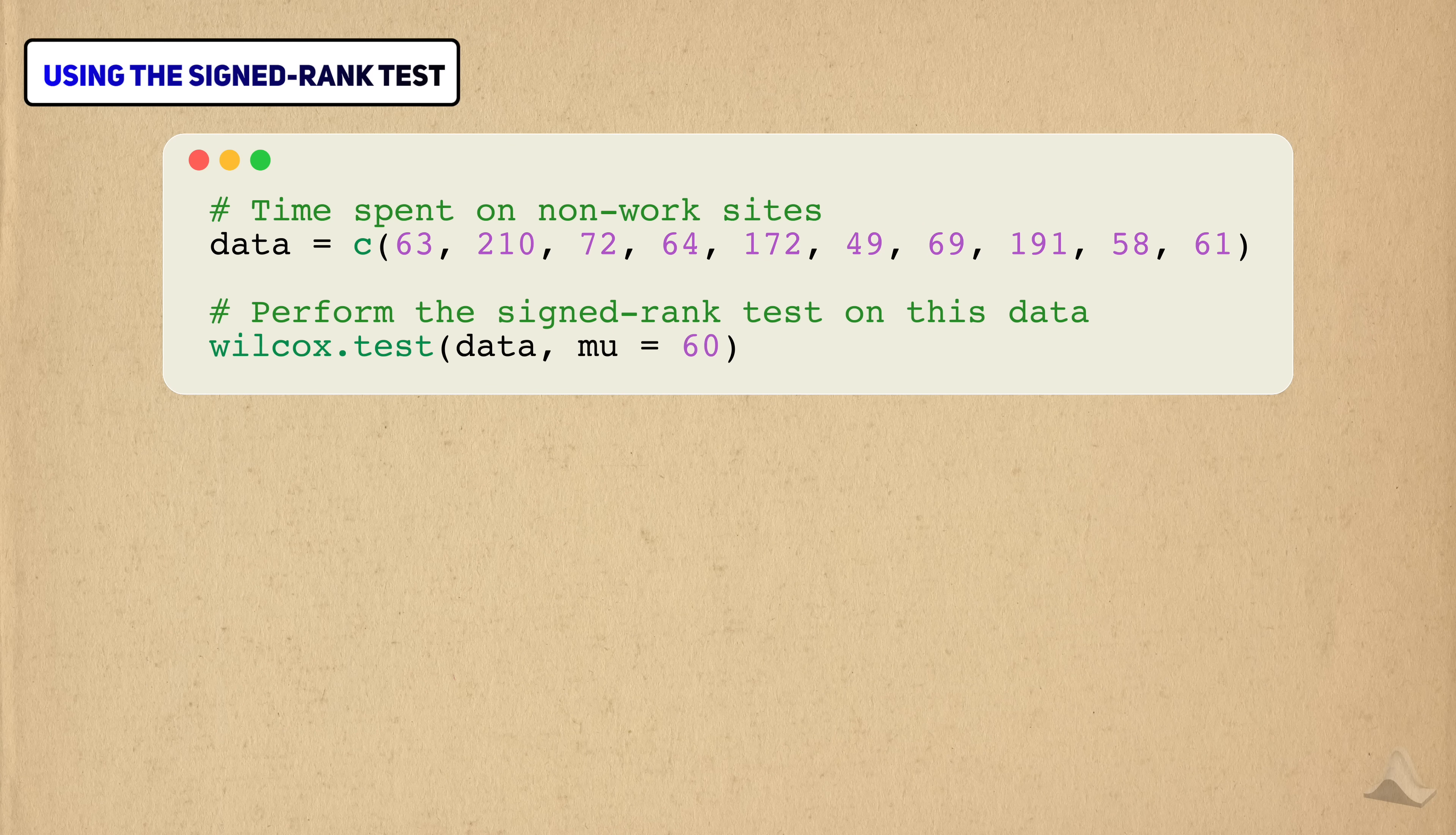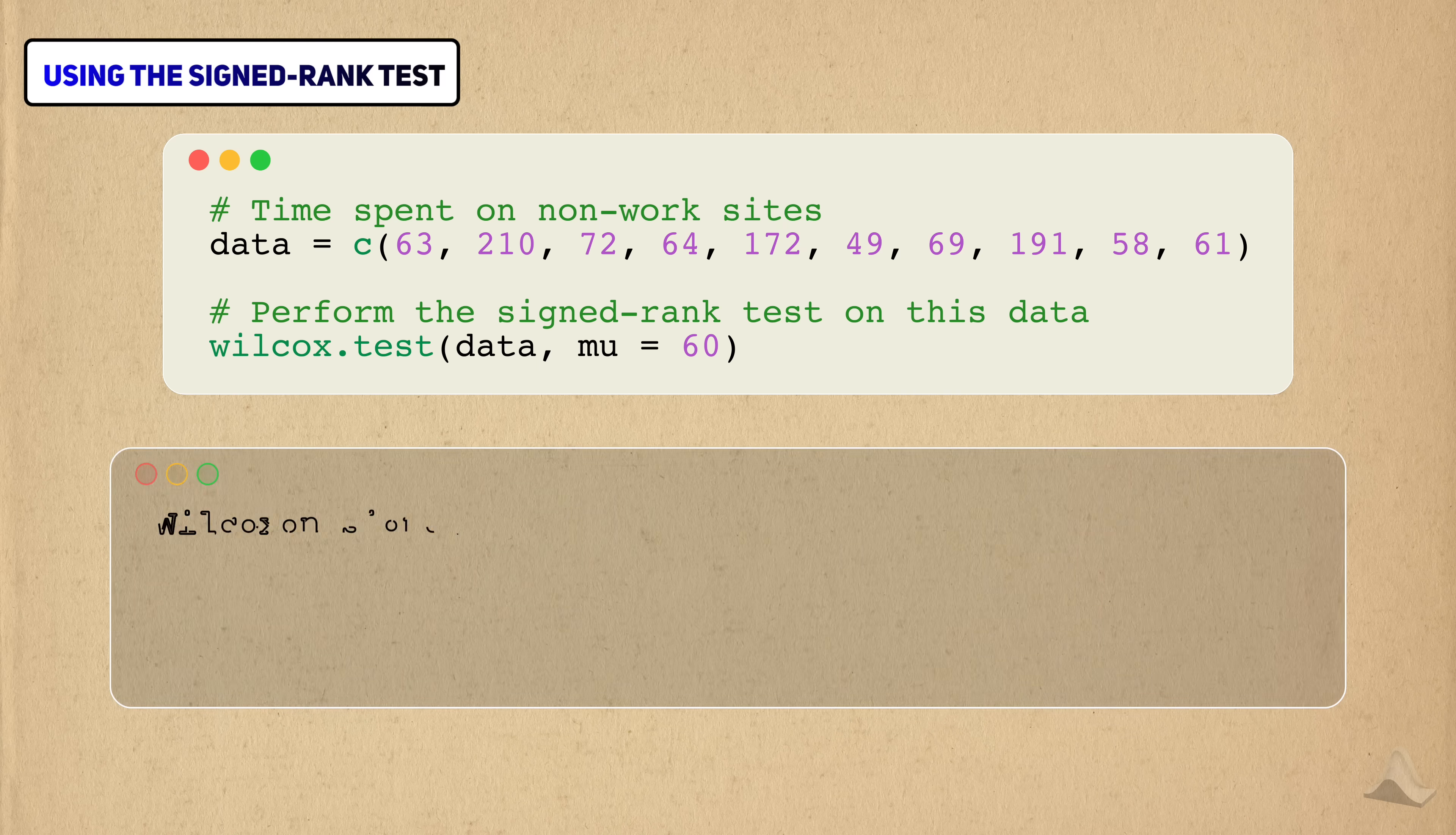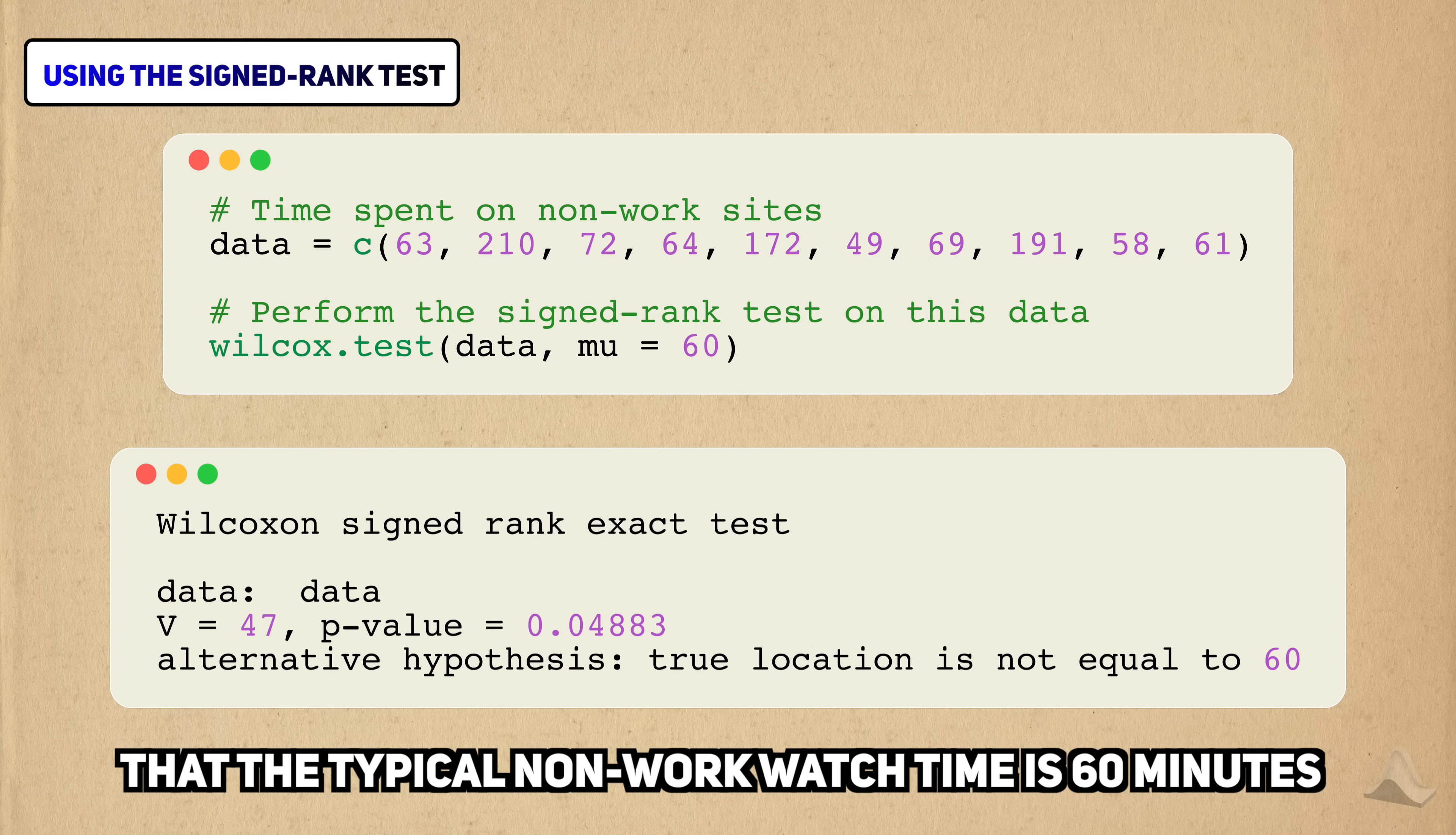Now that we know what the test is, we can actually perform it. And the corresponding function in R is the wilcox.test function. It's already in base R, so you don't need to bring in any extra libraries, which is nice. We'll apply it to my dataset from earlier. I just need to pass in the data in the form of a vector and specify that the null hypothesis is 60 through the mu argument. According to the test, the p-value is less than 5%, so we can reject the null hypothesis that the typical non-work video watch time for my employees is 60 minutes. Noted.